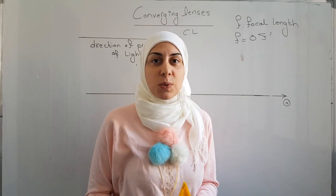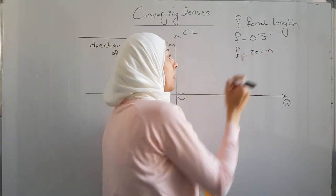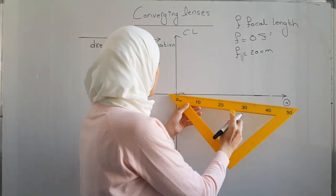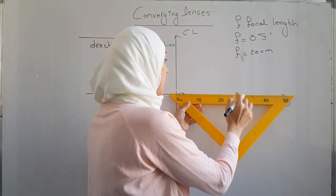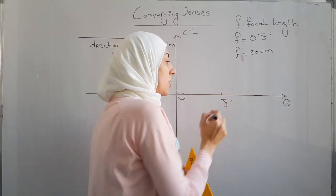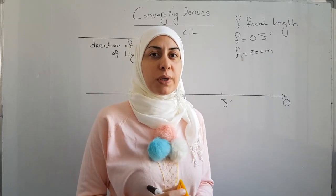So for example, if we have the focal length of a lens, the distance equals 20 centimeters, then on the optical axis we draw 20 centimeters starting from O and we locate the position of f prime, where f prime is called the image focus of the lens.